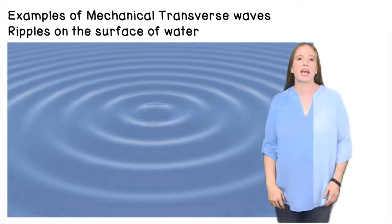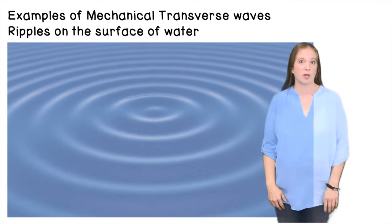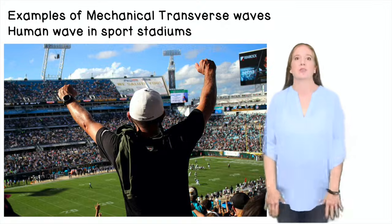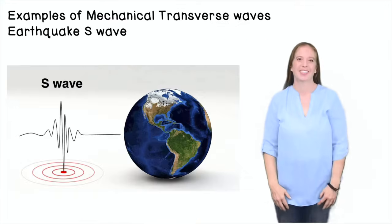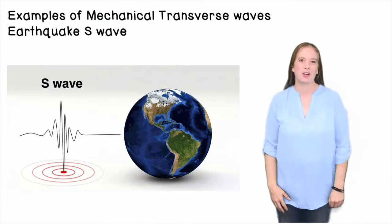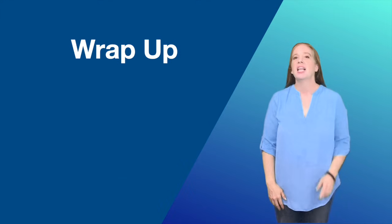Examples of mechanical transverse waves are ripples on the surface of the water, human waves at sporting events, and an earthquake secondary wave, or S-wave. Let's wrap it up.